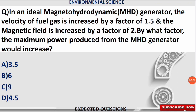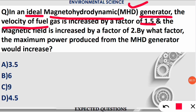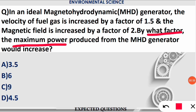The first numerical question is now on your screen. In an ideal magnetohydrodynamic generator, which is called MHD, the velocity of a fuel gas is increased by a factor of 1.5, and the magnetic field is increased by a factor of 2 — that means the magnetic field is doubled. The question asks: by what factor does the maximum power produced from the MHD generator increase or decrease?